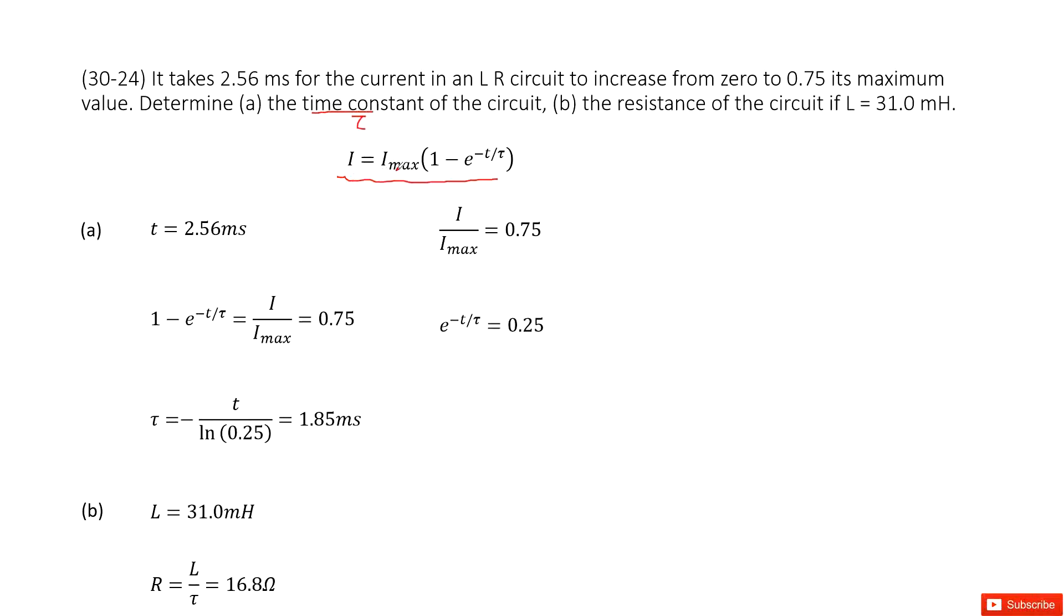In this equation, the ratio I over I_max is given, t is given. Can you find tau?